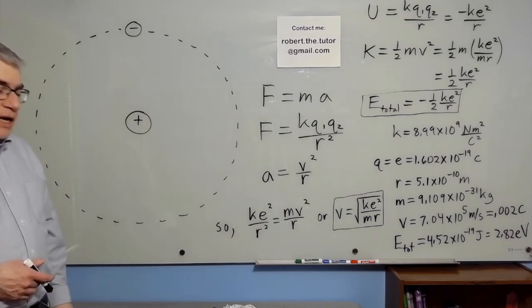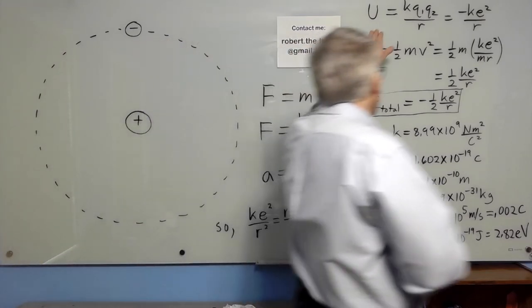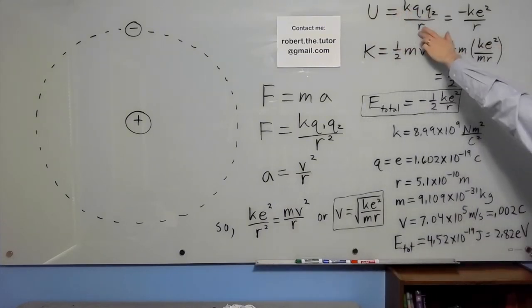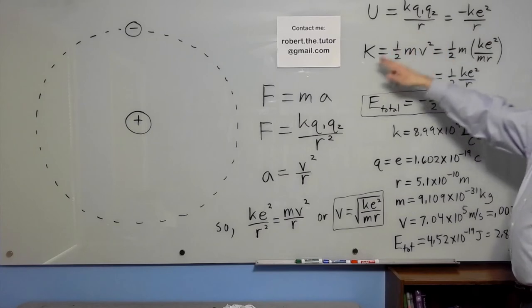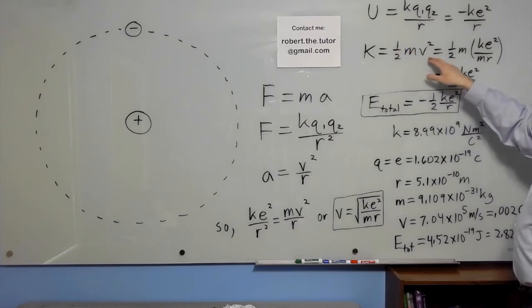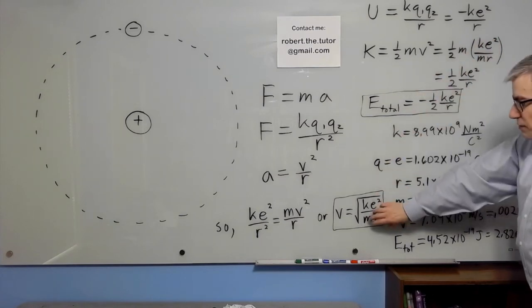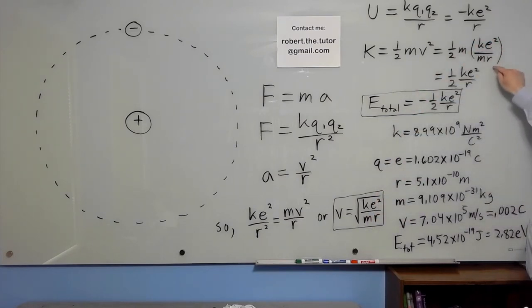Now, we can also find the energy. The potential energy is KQ1Q2 over R, so that's minus KE squared over R. The kinetic energy is 1 half MV squared, so 1 half mass of electron times this velocity squared, which simplifies to 1 half KE squared over R.